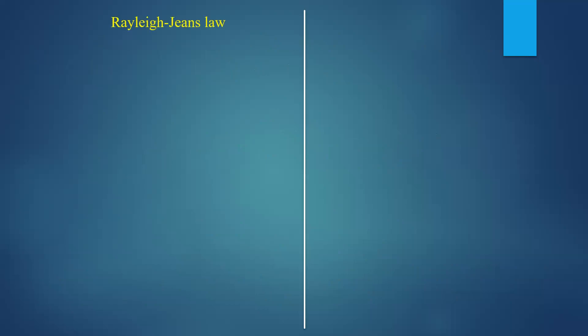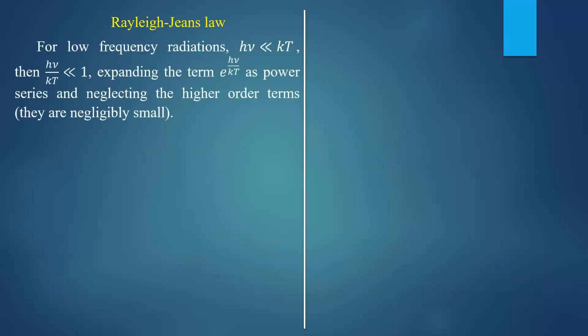Next, we will find out what happens to Planck's law of radiation in the shorter wavelength region and in the higher wavelength region. They lead to two major laws: Rayleigh-Jeans law and Wien's law. Rayleigh-Jeans law gives the energy density as a function of frequency and wavelength. We need to find what happens to Planck's law in the low frequency region.